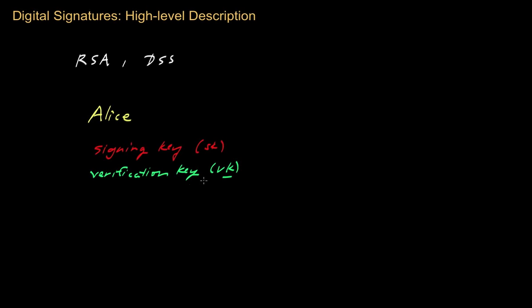Let's consider what a digital signature on a message will entail. If you have a message M and you wish to digitally sign it, what you're going to do is apply a mathematical transformation. Alice is going to apply a mathematical transformation to the message M and her signing key SK, and the result of that transformation will be a special sequence of numbers that we call the signature on the message M. The signature is derived from a combination of the message M together with the private signing key of Alice, and it produces a relatively short sequence of numbers as an output.